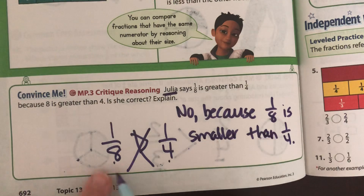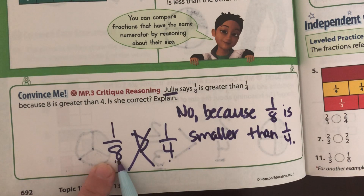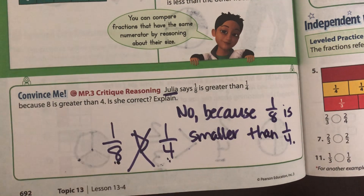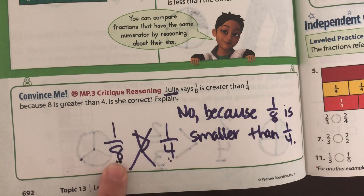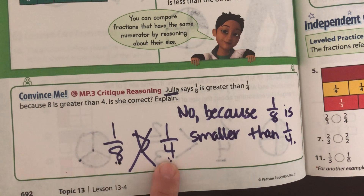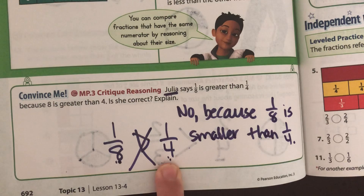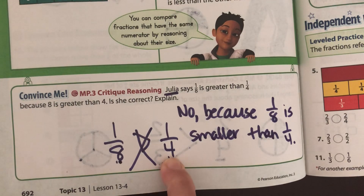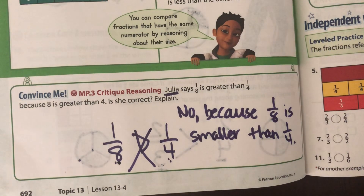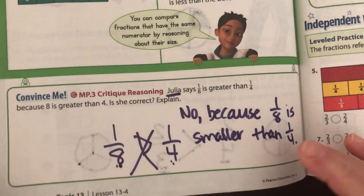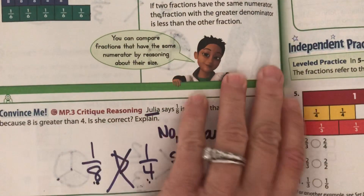One-eighth is smaller than one-fourth. Because when you cut something into eight equal slices, each slice is going to be smaller than if you cut it into four equal slices. Think: you have a chocolate bar or a cake. You're going to divide it into eight equal slices compared to only four equal slices. Do you want four people sharing that cake or eight people sharing that cake? It depends how big a piece you want.